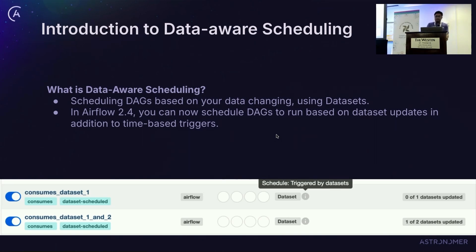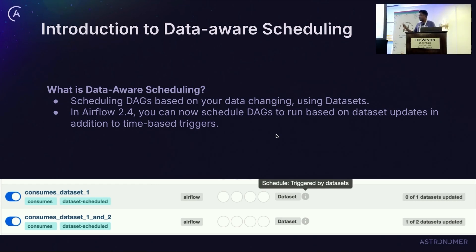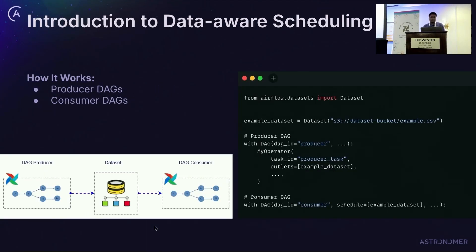Data-aware scheduling has been available since the 2.4 release. If you want to schedule your DAG based on an update to any of your datasets, apart from a time-based schedule, you can use this concept. In the Airflow UI, you can see in the schedule section there is a 'dataset triggered' option — that is how it is represented in Airflow.